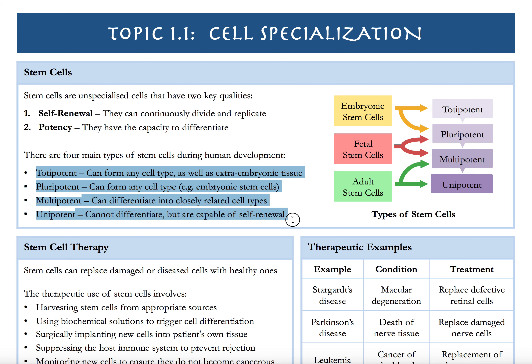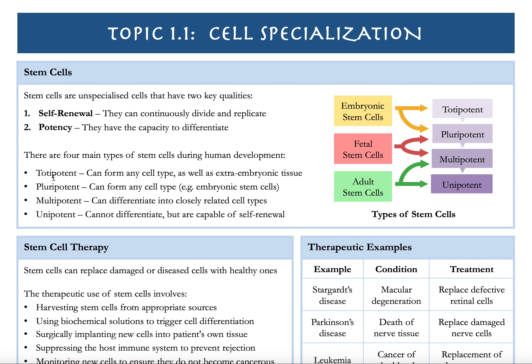There are several ways that we can classify stem cells. Totipotent is the most powerful stem cell — they can form any cell type, even tissues which are not an embryo. Pluripotent is similar, but this will only be embryonic, meaning after the cell was fertilized as a zygote from the fertilization of the sperm and the egg, then it will become a pluripotent cell.